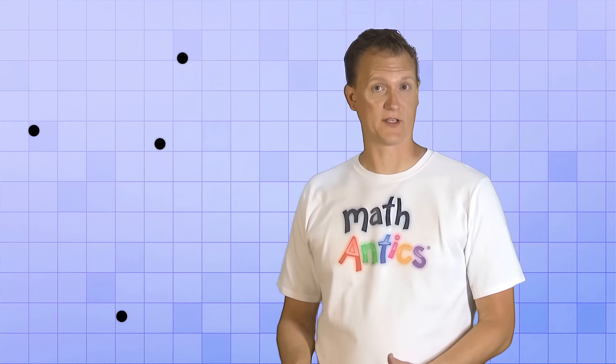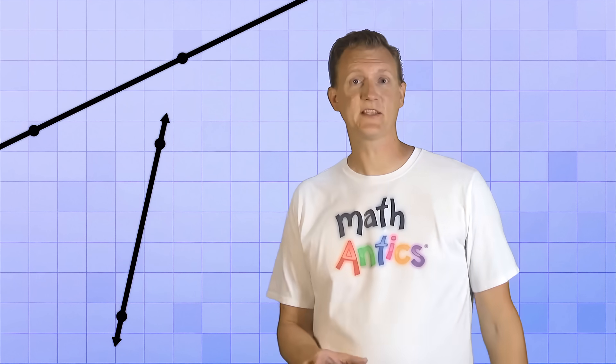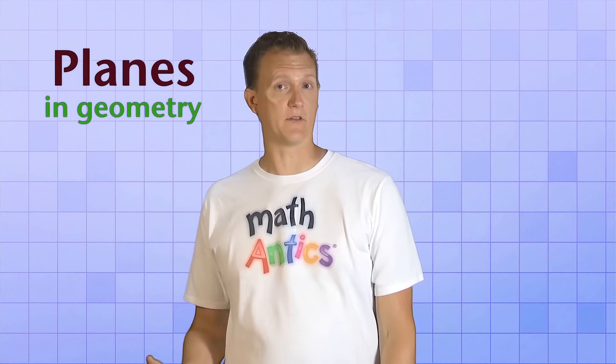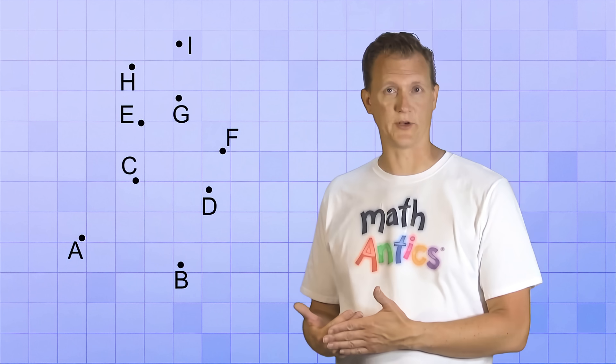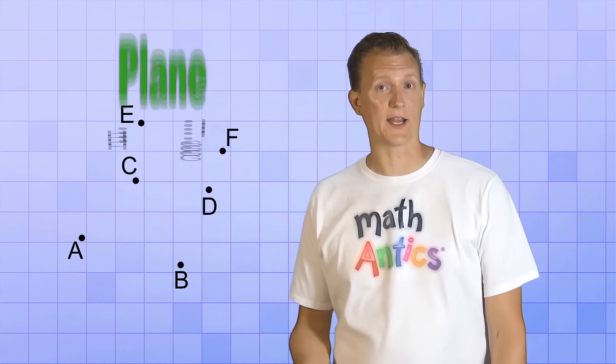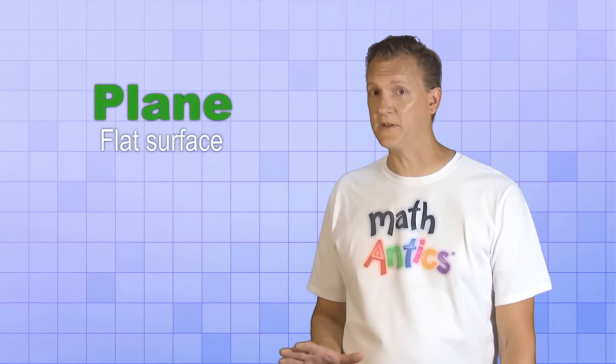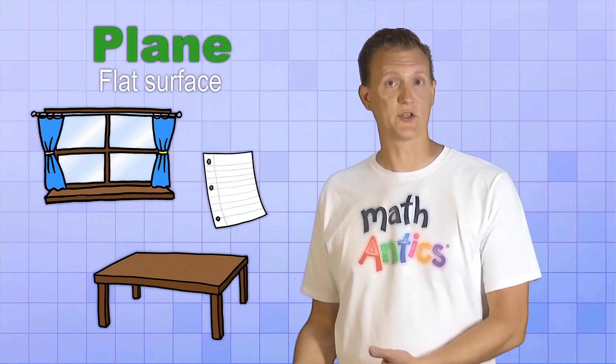OK, so now you know about points, and you know that you can form a line between any two points. The next thing we're going to learn about is planes. No, not the kind of planes that you fly in. Now to help you understand how planes and geometry work, let's go back and look at all those points that we had at the beginning of the video. It looks like all the points are the same depth on your computer screen, right? And if they were, we'd say that they're all in the same plane. And that's because your computer screen is a plane. It's a flat surface, like a window, or a sheet of paper, or a tabletop.